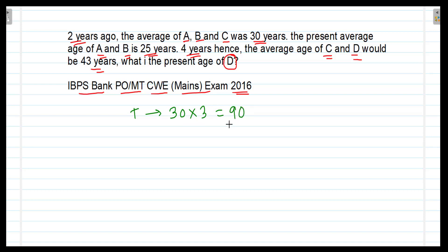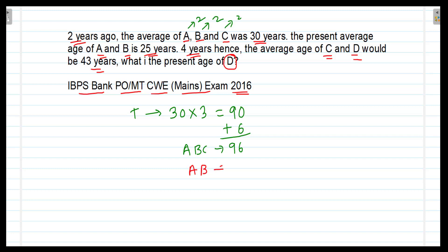Their present age will be higher, since each person's age increases by 2 years. With 3 members, the total increase is 6 years. So the total present age of A, B and C will be 96 years. It is also given that the present average age of A and B is 25 years. So their total age will be 25 into 2, which is equal to 50 years.